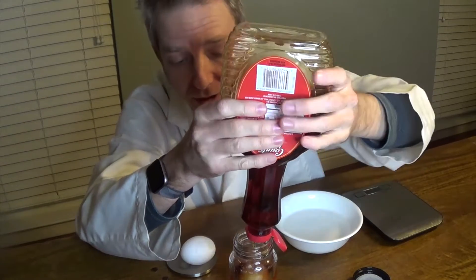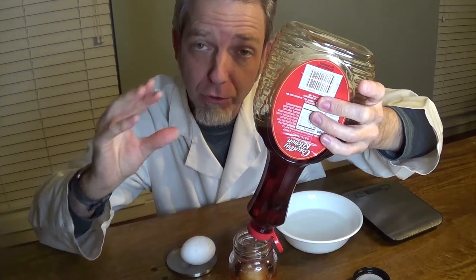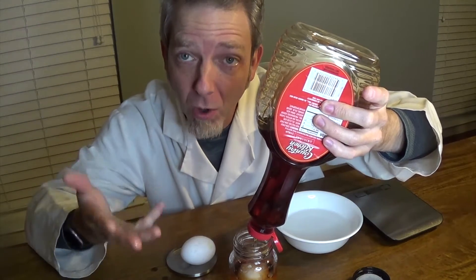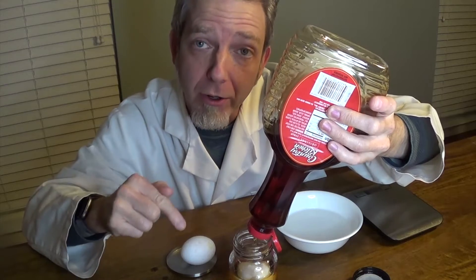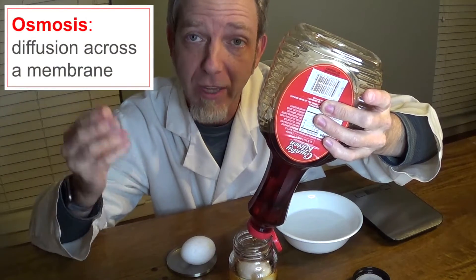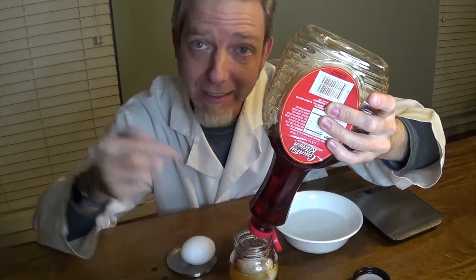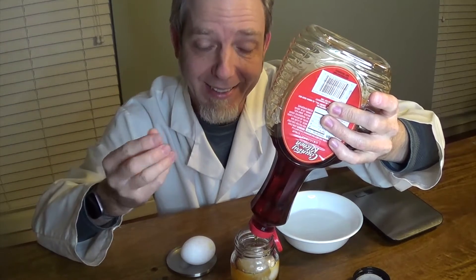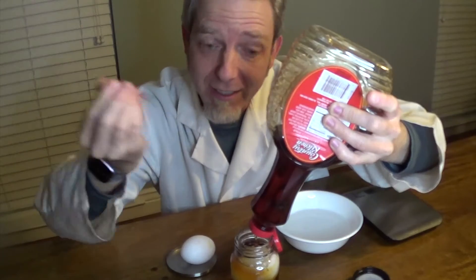Now I'm going to fill it up with pancake syrup. When we dissolved the shell from the egg, we allowed that inner membrane to get larger or smaller — it's flexible. One of the purposes of the cell wall, just like the eggshell, is to hold that cell into its shape. When we put it in water, osmosis — the process of letting things go in and out of the cell membrane — allowed water to go into the cell, because it noticed there was more water on the outside of the cell than on the inside. The cell wants to balance that by taking some water in.